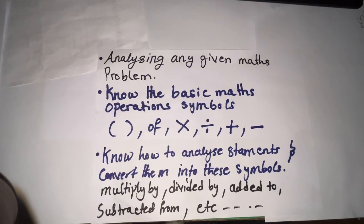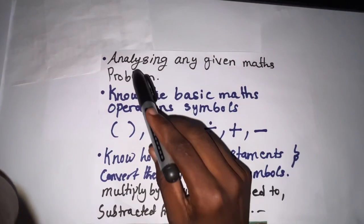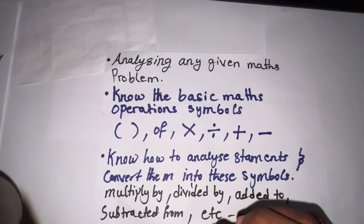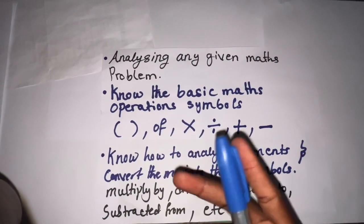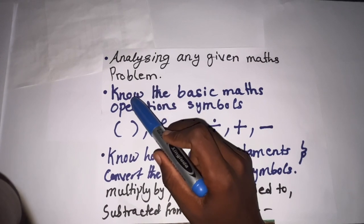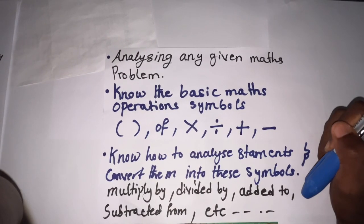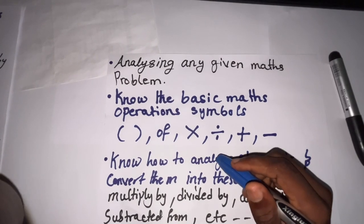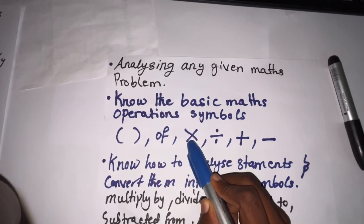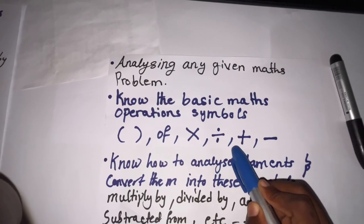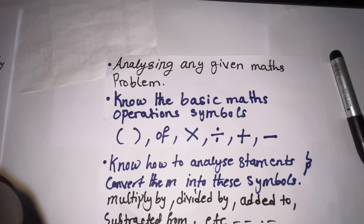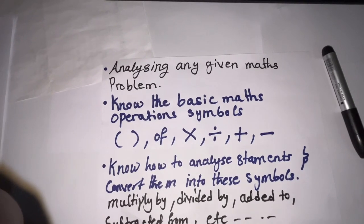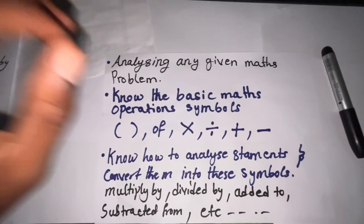Alright, let's go. Here is the beginning — we have the paper in front of us and the video is all about analyzing any given math problem. Before we go further, we need to know the basic math symbols. We have the bracket sign, the 'of' sign, the multiplication sign, the division sign, the addition sign, and the subtraction sign. We should not only know the basic operation symbols but also know how to use them — how to analyze statements, read them, and convert them.